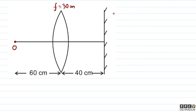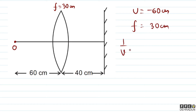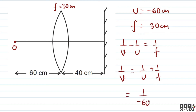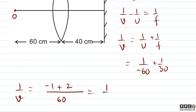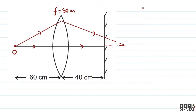First, let us think: where would the image form if the mirror were not there? Here u equals minus 60 cm, and since it is a convex lens, f equals plus 30 cm. Applying the lens formula: 1/v minus 1/u equals 1/f, so 1/v equals 1/u plus 1/f equals 1/(minus 60) plus 1/30. Taking LCM as 60, we get minus 1 plus 2 equals 1/60, so v equals 60 cm.